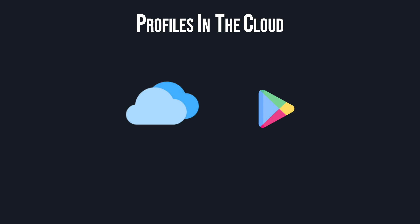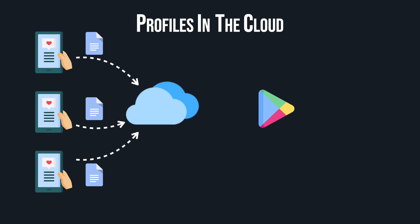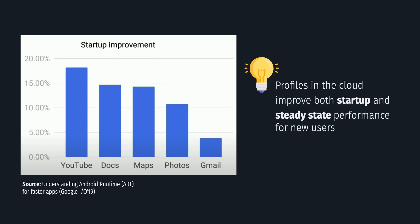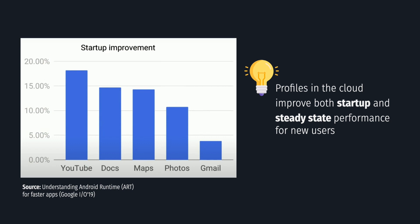The main idea behind Profiles in the Cloud is that most users use the app in a very similar way. So in order to improve performance right after installation, we can collect profile data from people who already used the app. This aggregated profile data is used to create a file called a common core profile for the application. When a new user installs the app, this file is downloaded alongside the application. ART uses it to pre-compile classes and methods that are frequently run by most users, so a new user gets better performance right after downloading the app. After the user runs the app, ART will gather user-specific profile data and recompile frequently used code when the device is idle. And the best part is that it all happens behind the scenes — we developers don't have to do anything to enable it.